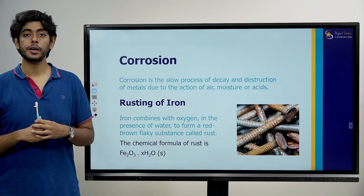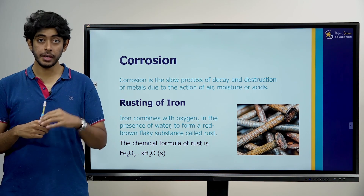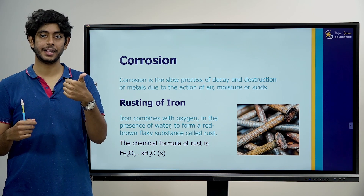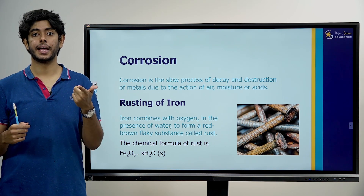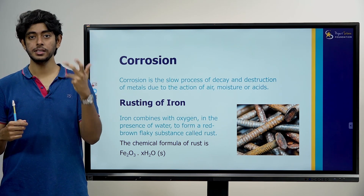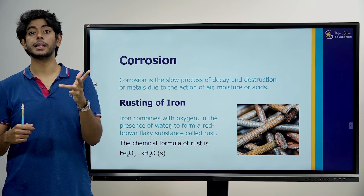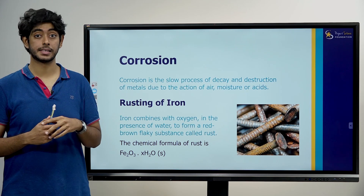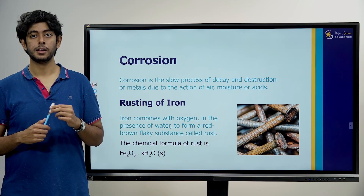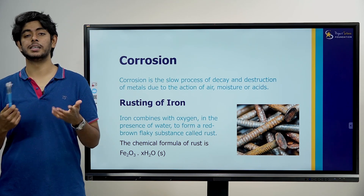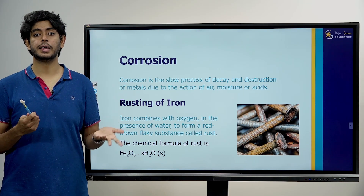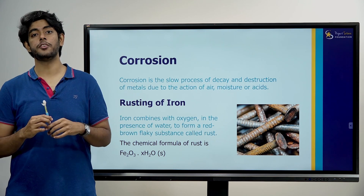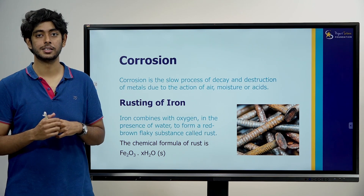We have mainly five types of reactions: combination reaction, decomposition reaction, displacement reaction, double displacement reaction, and redox reaction. Now let's see some real life examples of chemical reactions.